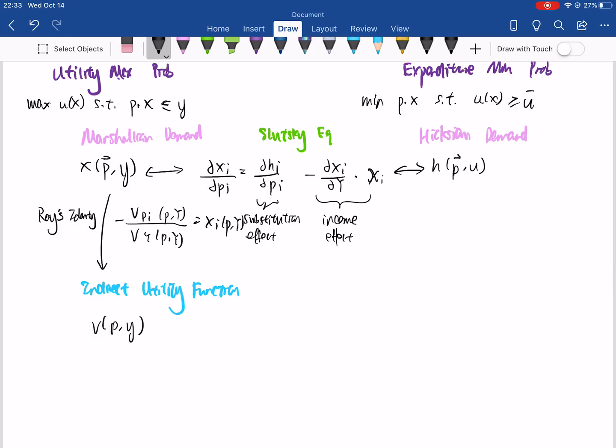So that's equal to your Marshallian demand. So this basically allows you to convert from the Marshallian demand to the indirect utility function, and vice versa backwards. Similarly for the Hicksian demand, we also have a similar picture where we have the expenditure function.